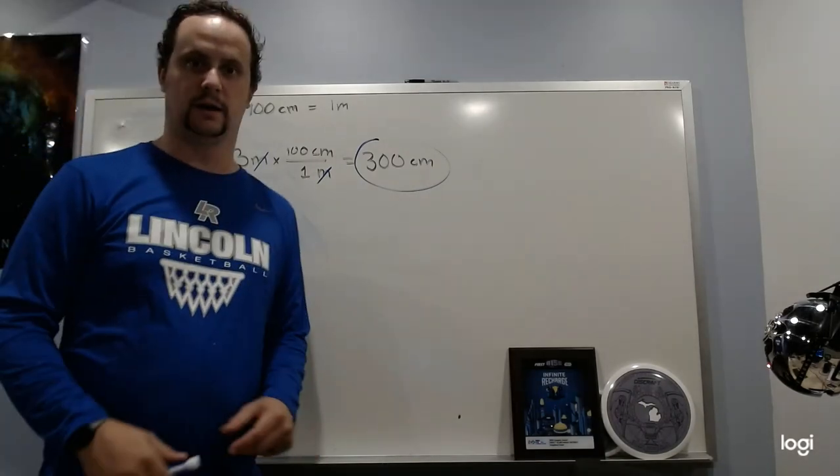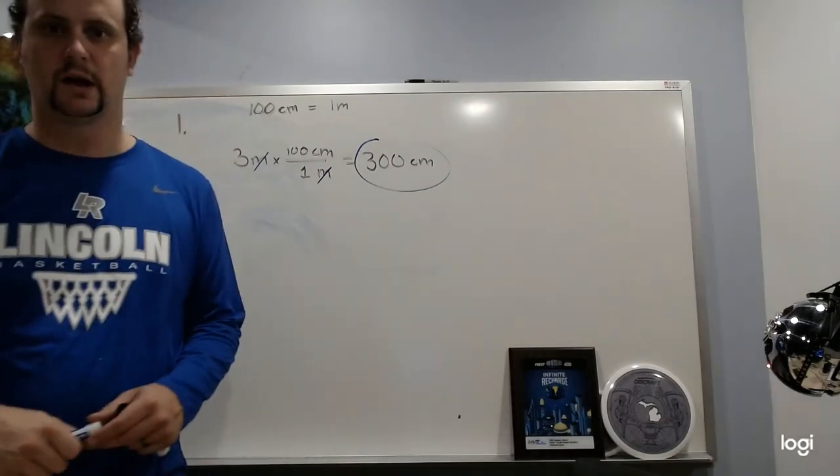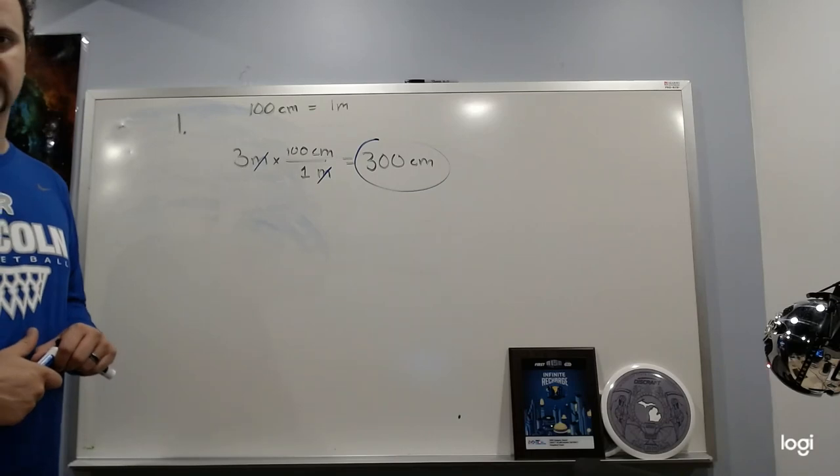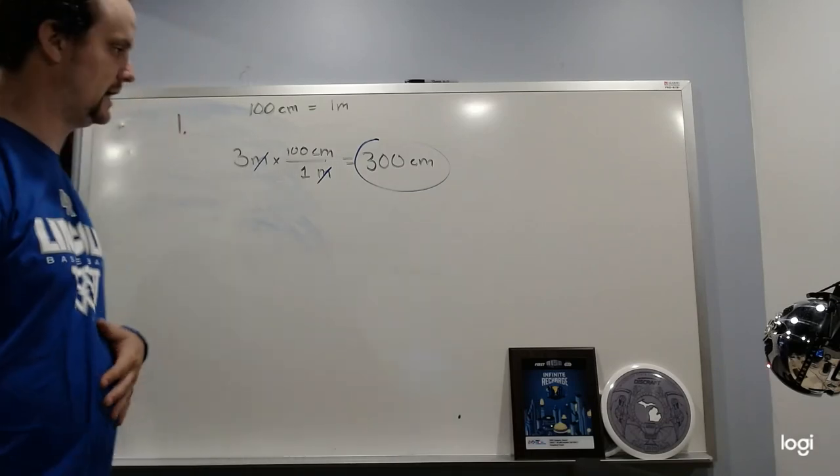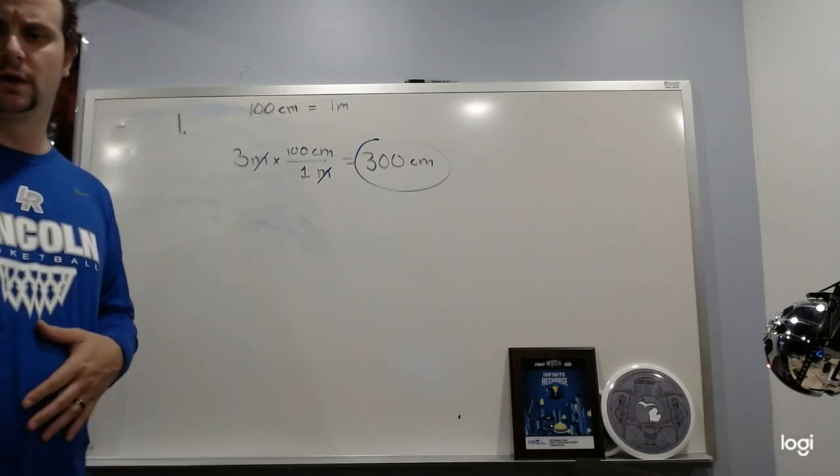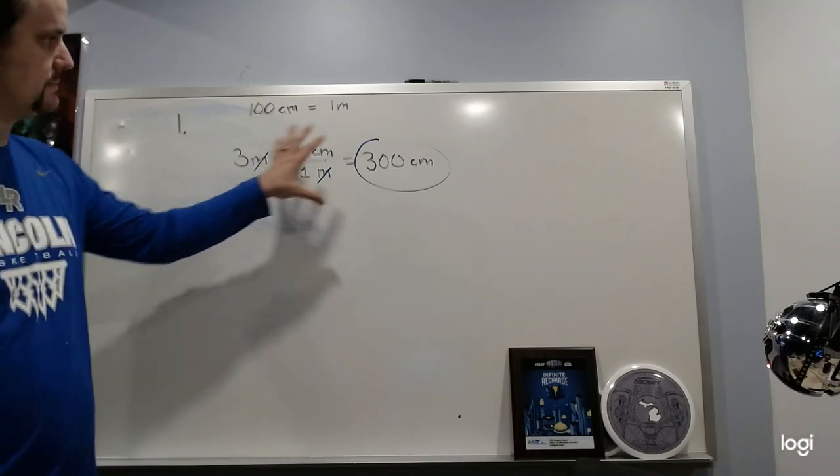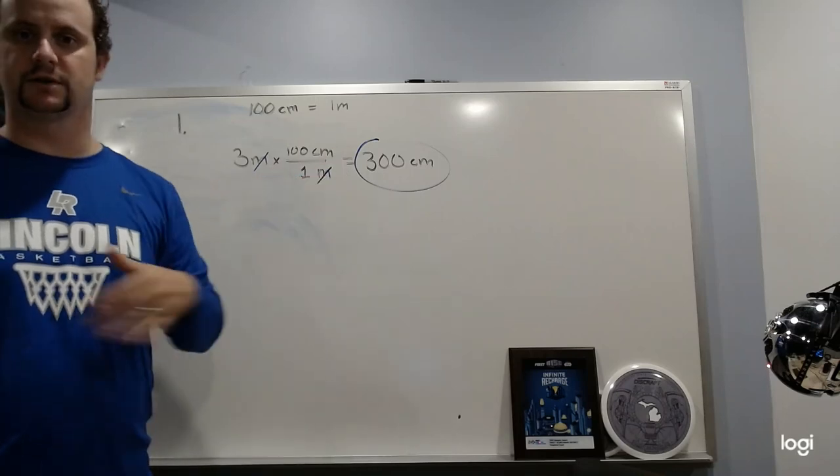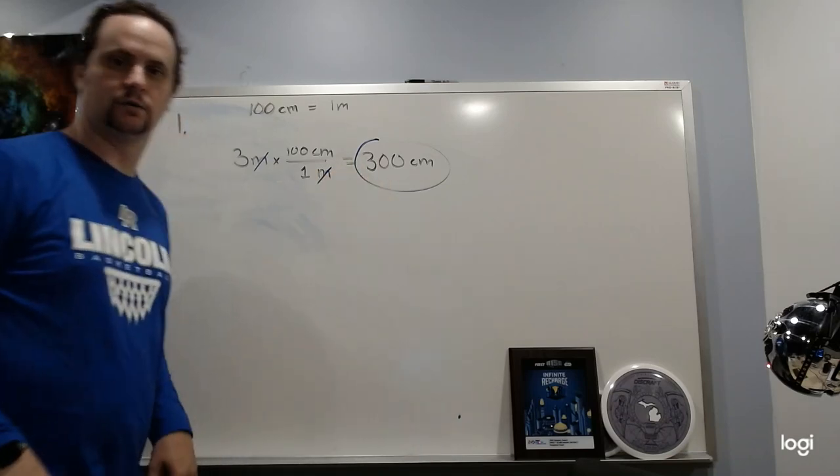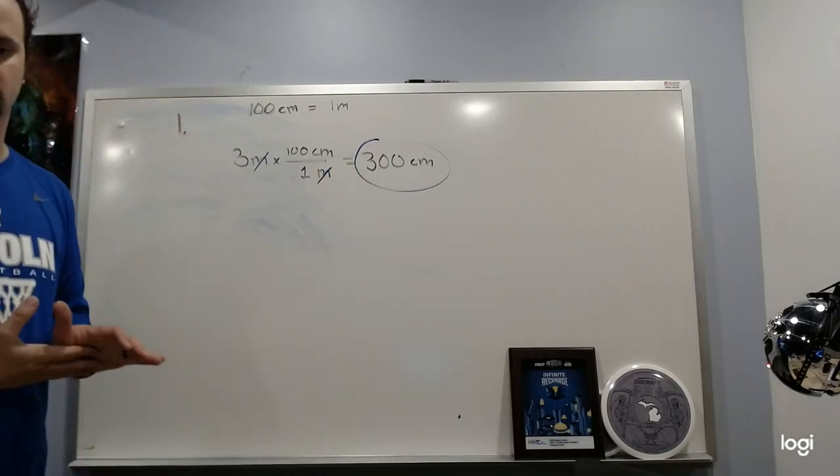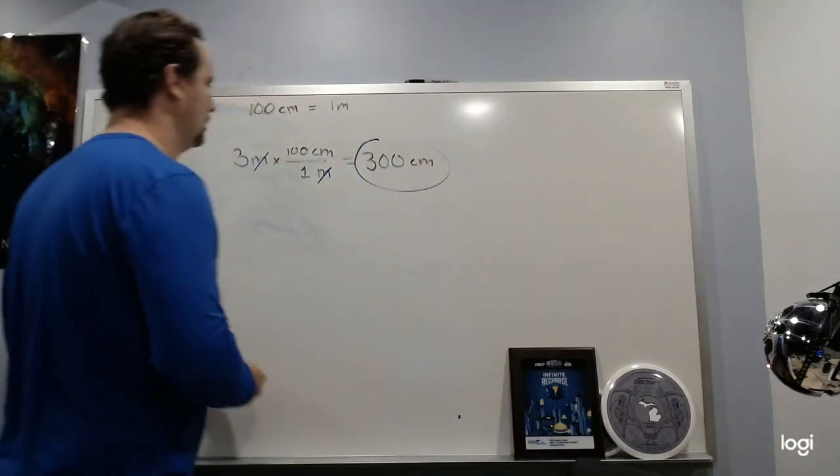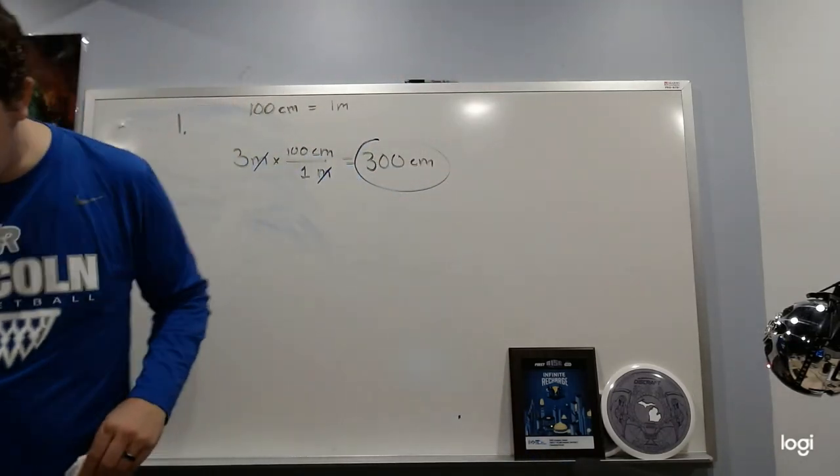That's number one. That's just a straight-up conversion. There's a couple of those on there, nothing that is too crazy. But using this method, you can convert several times in a row if you need to. Just use the conversion factor and multiply as you go to cancel out whatever units that you don't need.